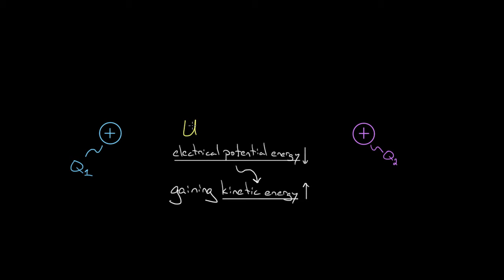So why U for potential energy? PE would've made sense too, because that's the first two letters of the words potential energy. But more often you see it like this: we put a little subscript E so that we know we're talking about electrical potential energy and not gravitational potential energy.